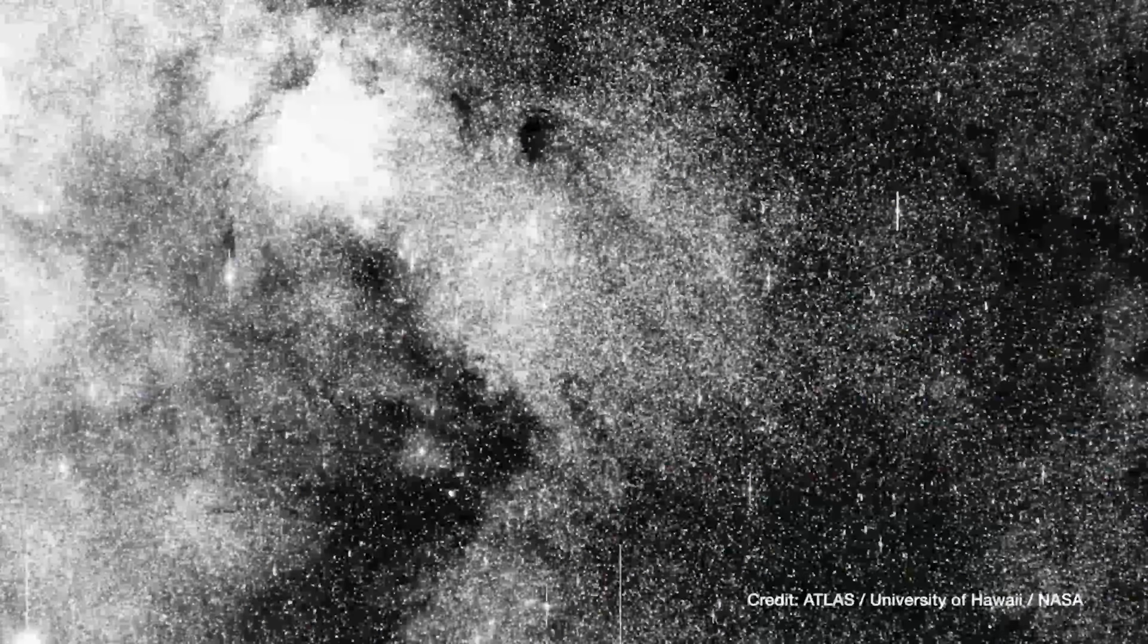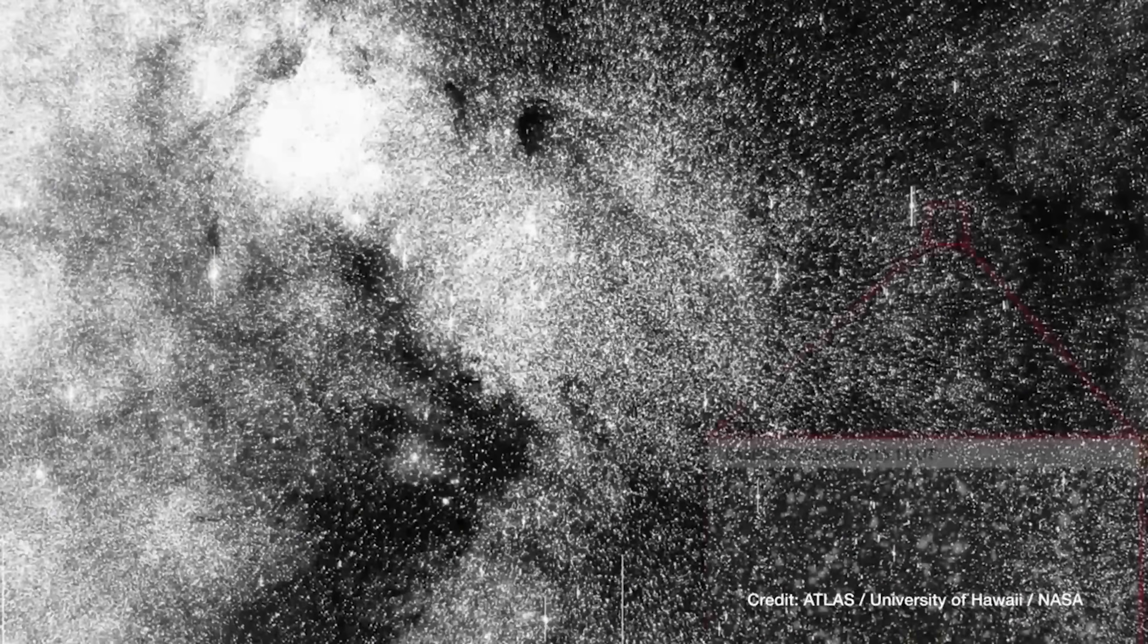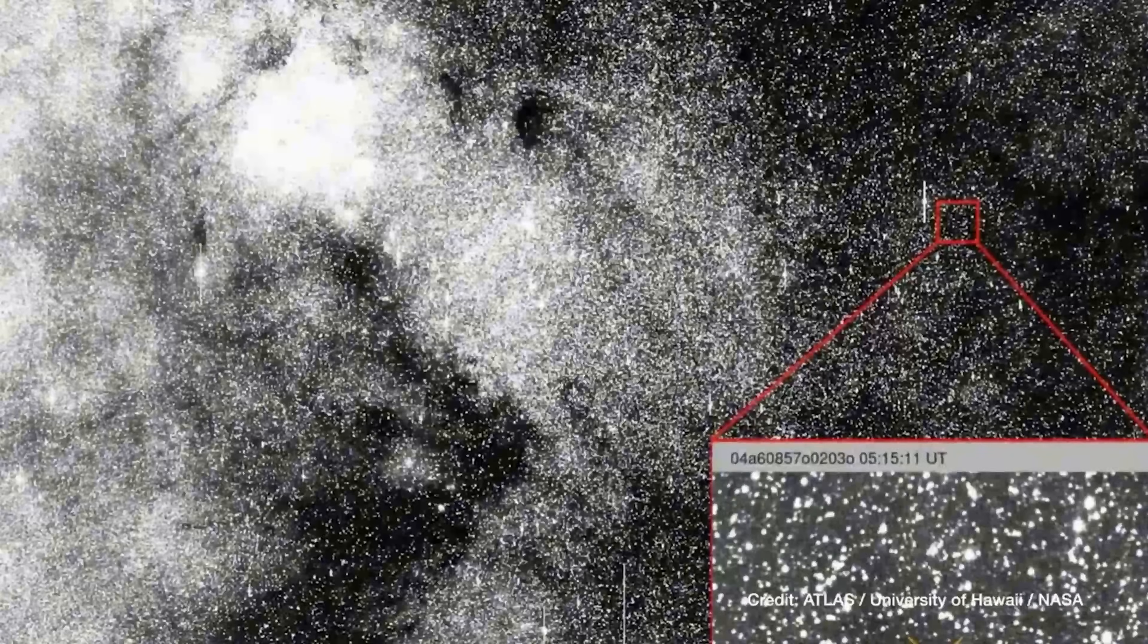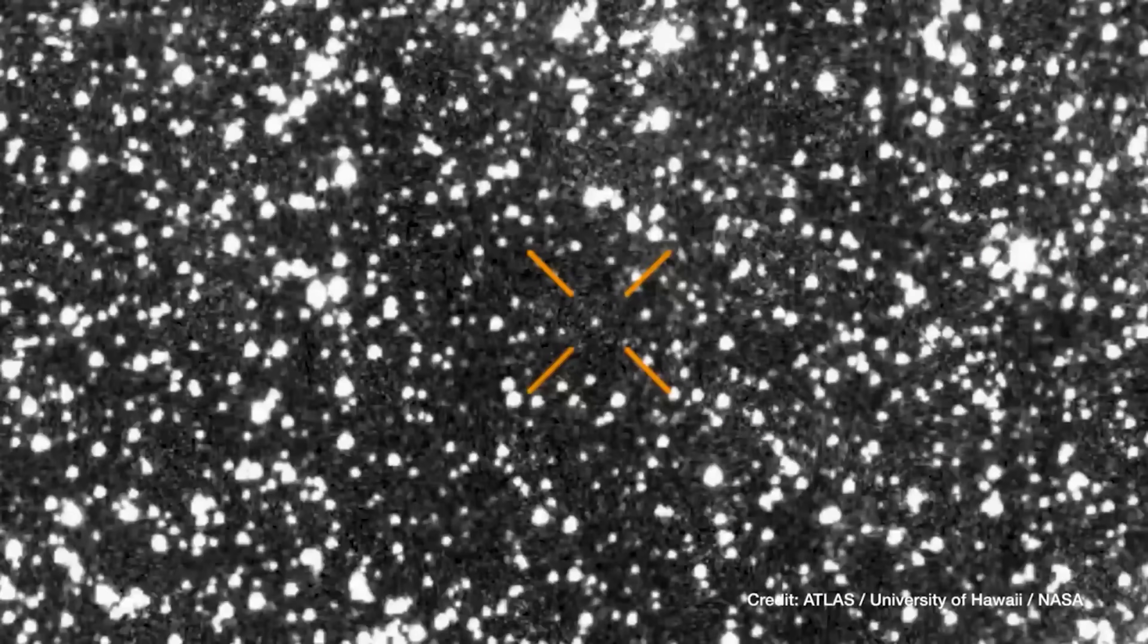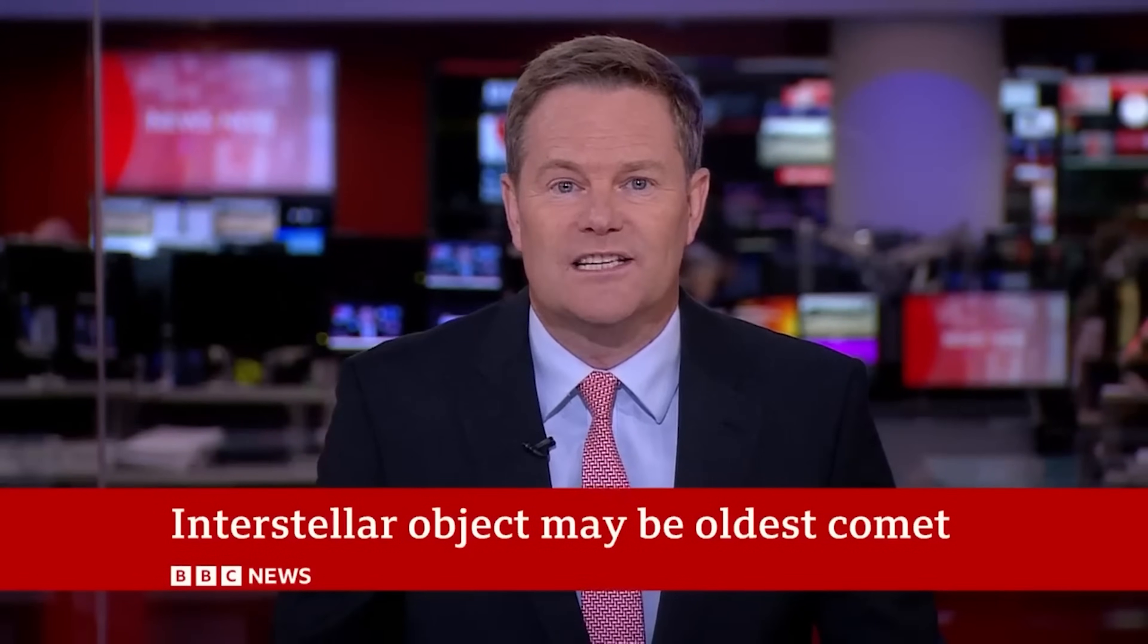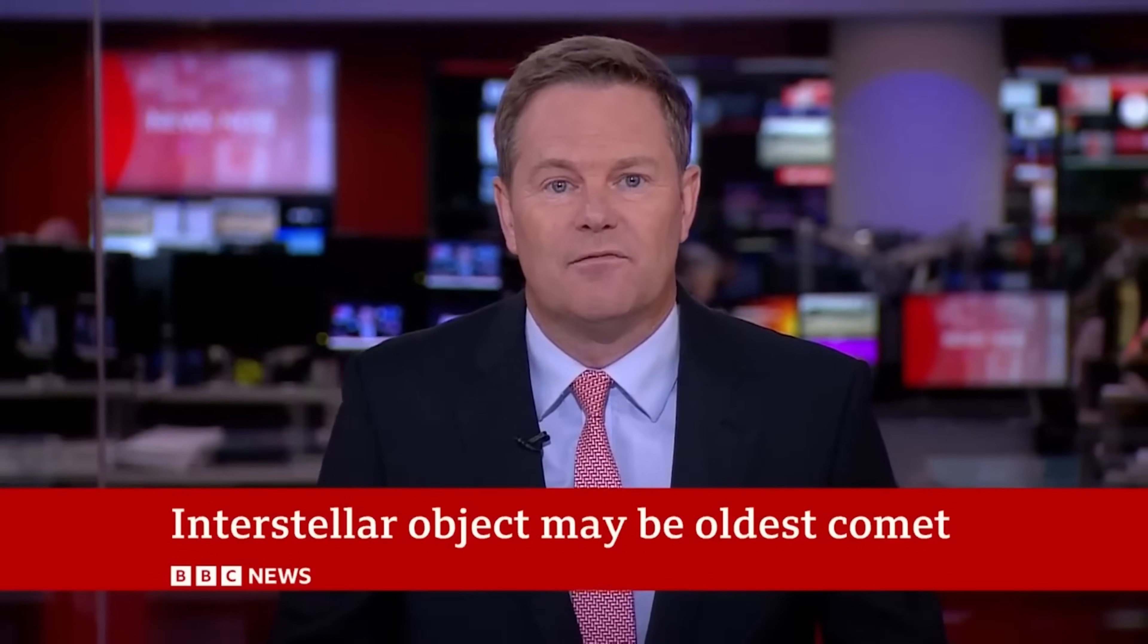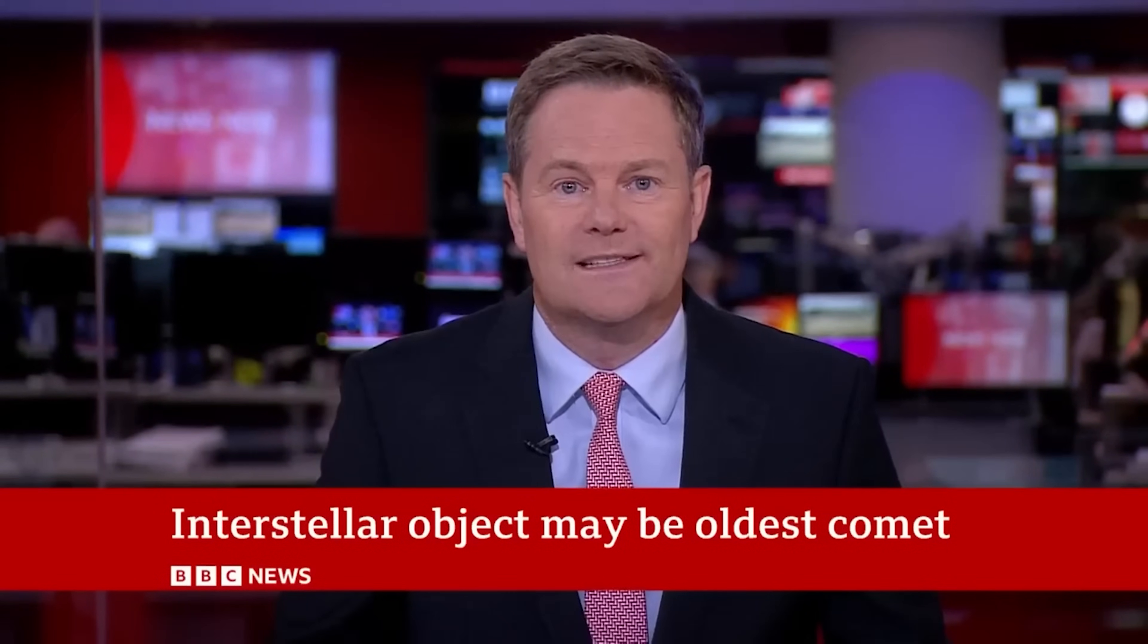3I Atlas was discovered on July 1st by the NASA-funded Atlas Survey. It was discovered using their telescope at Rio Hurtado in Chile and was first detected as a speck of light moving relative to background stars.